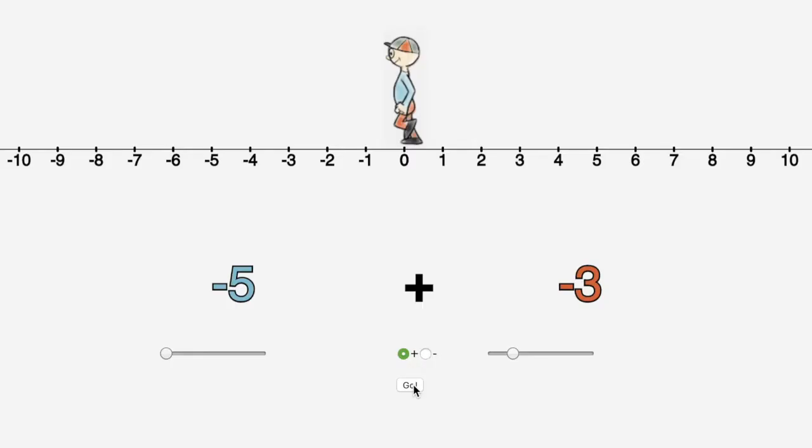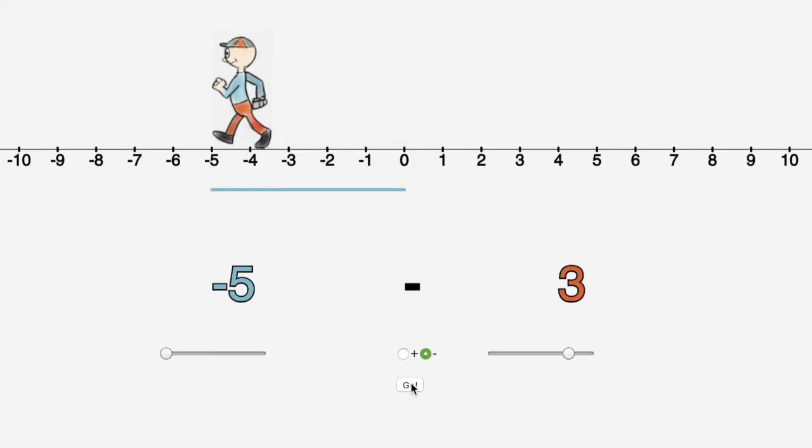We could also compare subtract positive and add negative. Here Stefan does negative five plus negative three. And here he does negative five subtract positive three. The same answer.